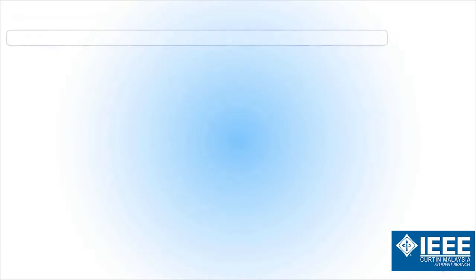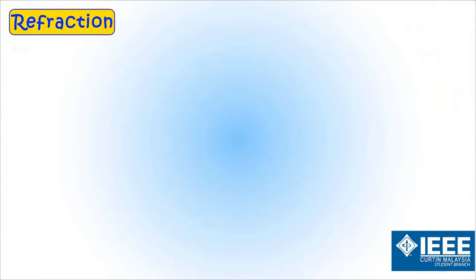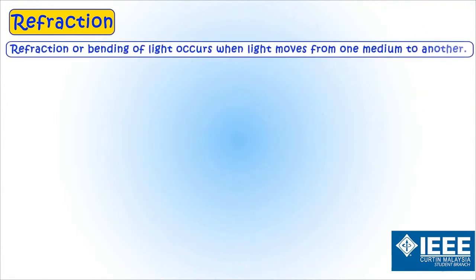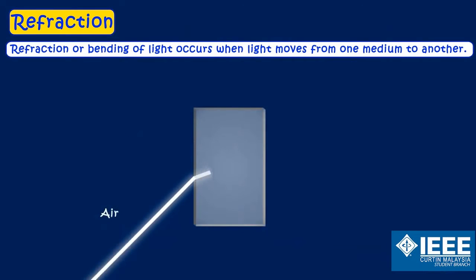We will be learning about the behavior of light when it travels from one medium to another medium. Refraction or bending of light occurs when light moves from one medium to another medium. It can be air to water, water to air, air to glass, or glass to air.